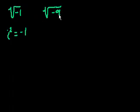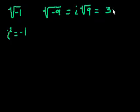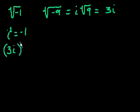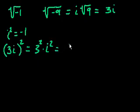Because then you could say the square root of negative 9 is the same thing as i times the square root of 9, which equals 3i. And how can we say that? What happens when you square this thing? 3i squared is equal to 3 squared times i squared. That equals 9 times negative 1, which equals negative 9.